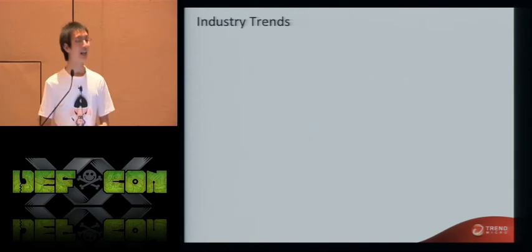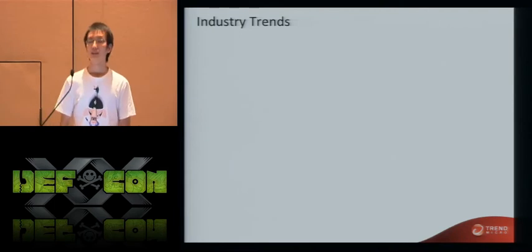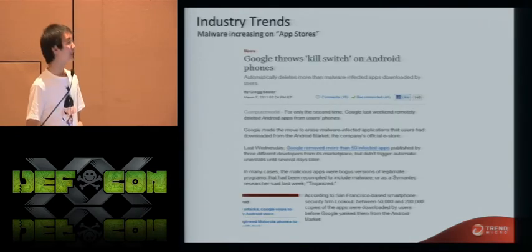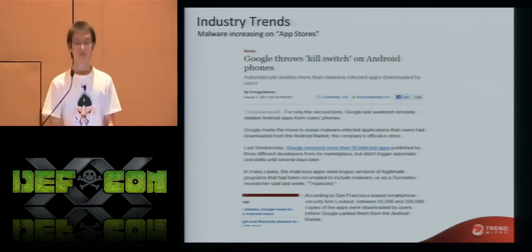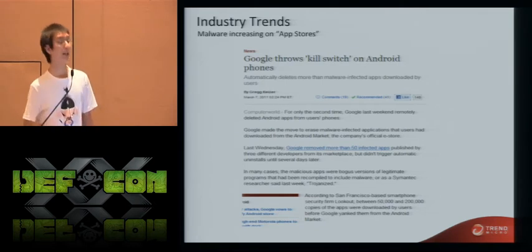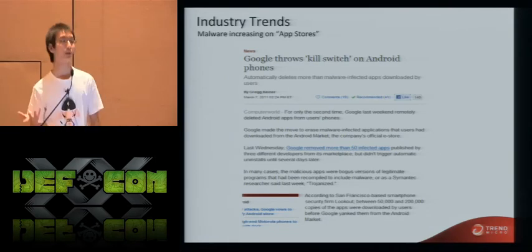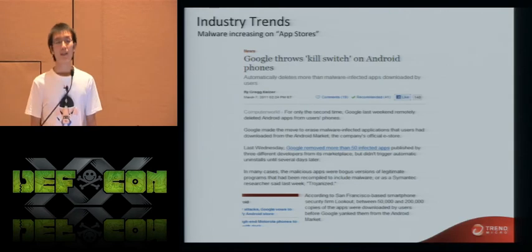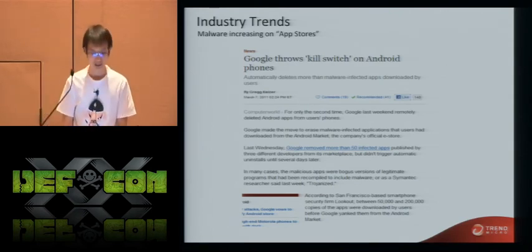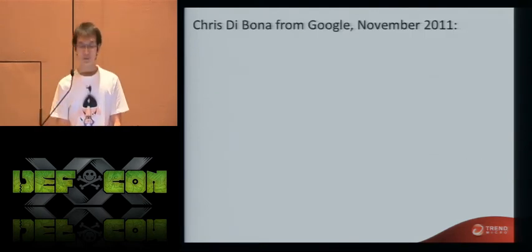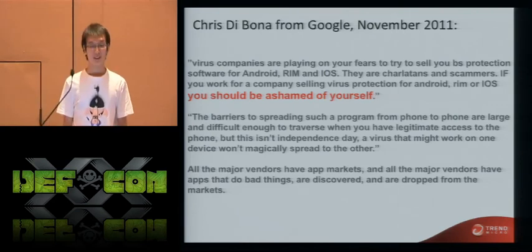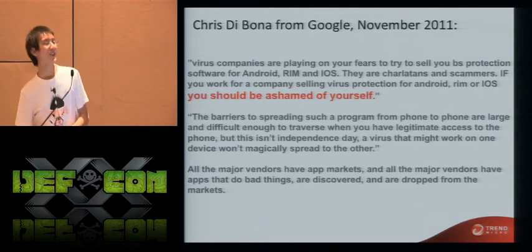When Android was designed, Google certainly had security in mind. We start from three announcements that Google made about Android itself. The first was announced in March 2011 because some bad guys placed bad applications on the Google Market. Google threw a kill switch on Android phones and showed their power by removing 50 infected or bad applications. Then Chris DiBona from Google made a statement that shocked the world — he said Android is safe.